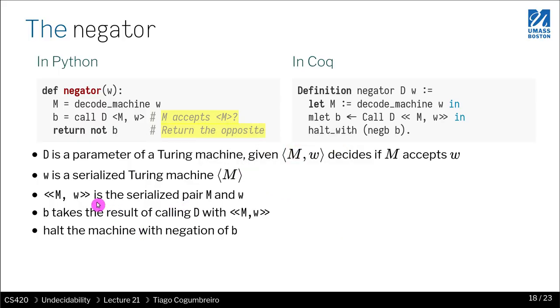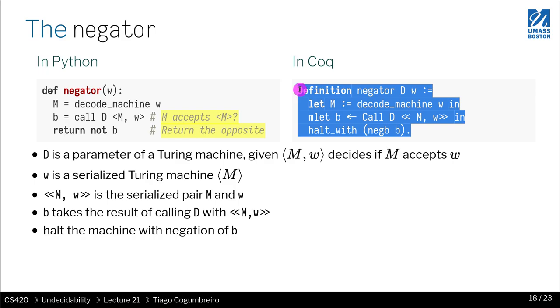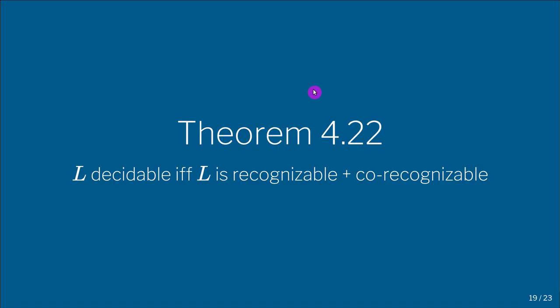So we saw all of this—this is kind of like our pseudo Python code and this is how we write it in Coq. And in the next video I'm gonna start the proof of Theorem 4.22, which is to say that a language is decidable if and only if it's recognizable and co-recognizable.